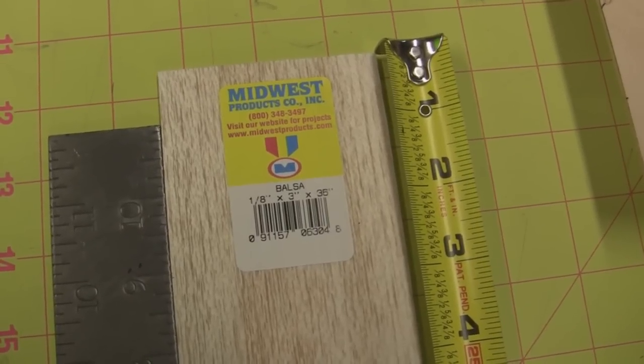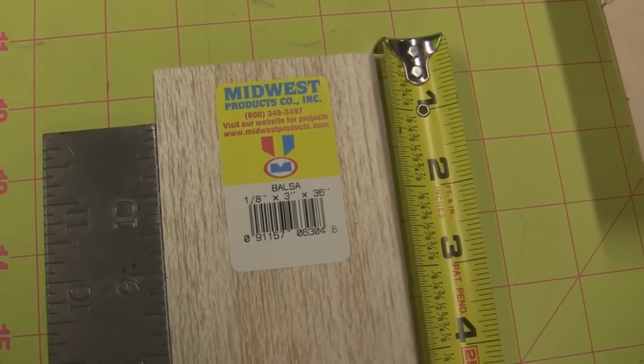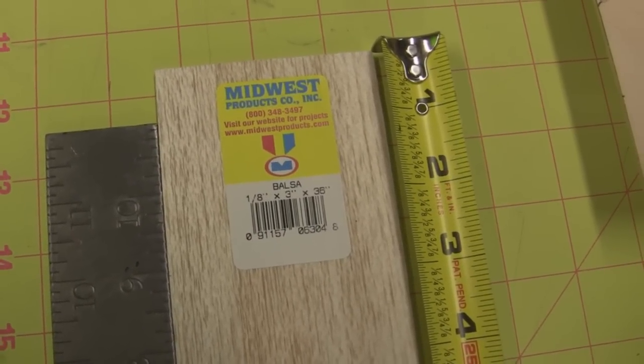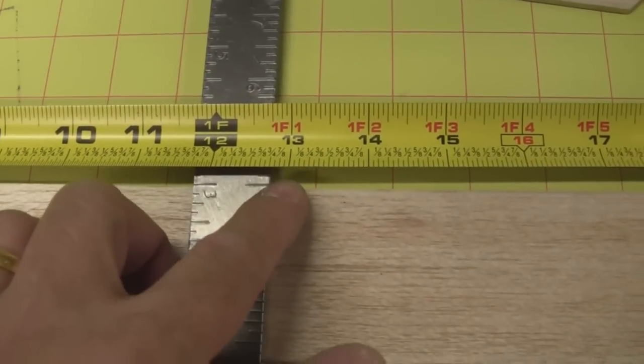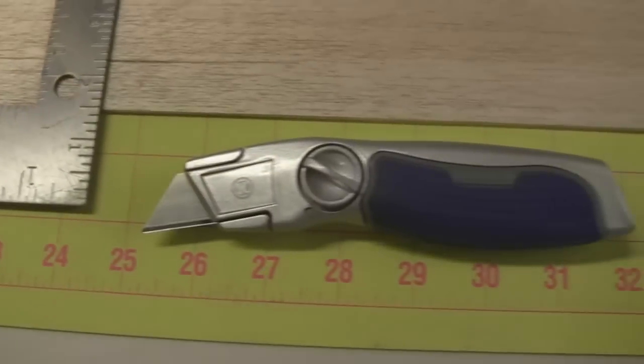We're going to need a piece of 1/8 inch by 3 inch by 36 inch long balsa to make the two elevrons. Basically, we're going to just cut two pieces to a length of 12 and 3/4 inches long. You can use the box cutter to do that.